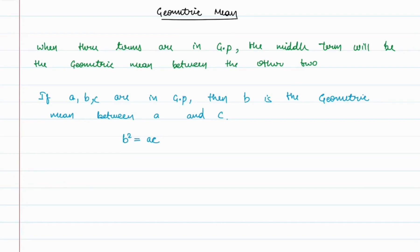In the previous video we discussed the properties of geometric progression. In this video we are going to discuss the geometric mean between two terms. When there are three terms in GP, the middle term is the geometric mean between the other two. So if a, b, c are in GP, then b is the geometric mean between a and c, and the relation is b squared equals a into c.